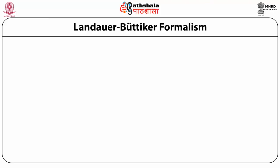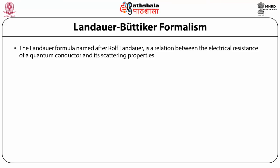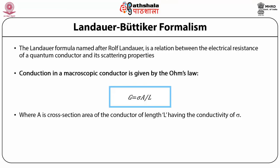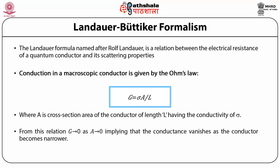The Landauer-Büttiker formula, named after Rolf Landauer and Büttiker, is a relation between the electrical resistance of a quantum conductor and its scattering properties. Conduction in a macroscopic conductor is given by Ohm's law: G = σA/L, where A is the cross-section area of a conductor of length L having conductivity σ. From this relation, G tends to zero as A tends to zero, implying that the conductance vanishes as the conductor becomes narrower.